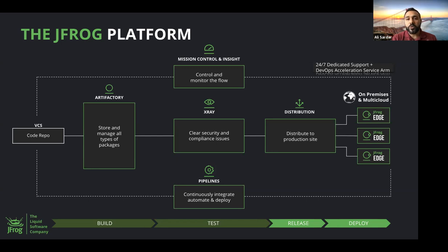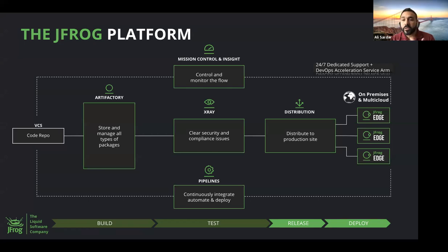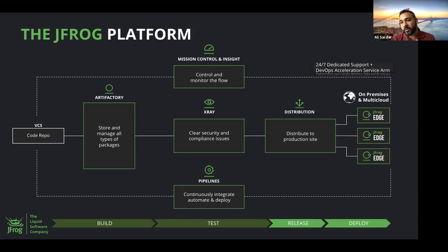Once you've built and scanned your code for security issues, it becomes time to distribute it. JFrog Distribution allows you to distribute your production code to a variety of hybrid cloud sites and edge nodes. On top of that sits mission control, providing end-to-end visibility around the entire process. The entire platform is highly available and can be consumed either as a self-managed deployment in your own premises, or as a complete SaaS offering with 24/7 dedicated support.